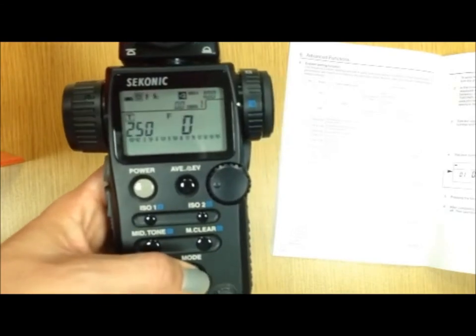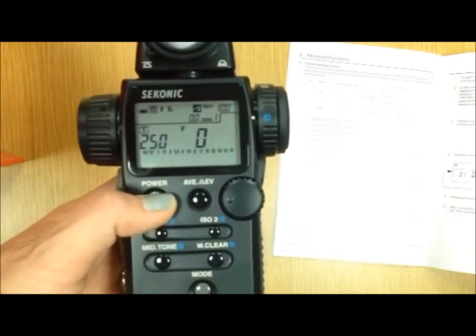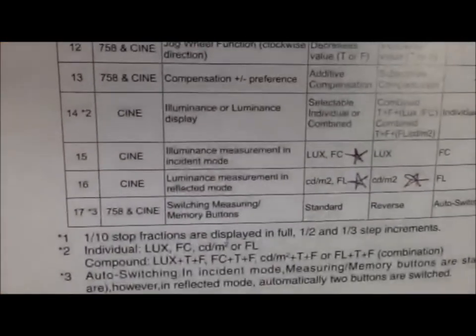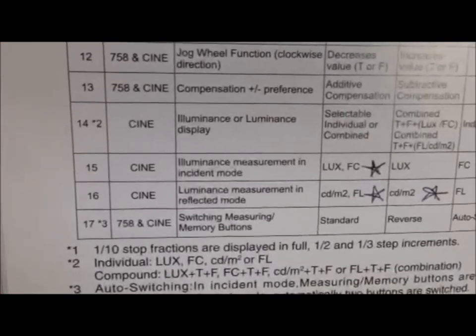In order to enter the custom setting menu, you're going to actually turn your device off. You can find a table of custom settings on page 40 of your manual. And today the two numbers I'm going to show you are 15 and 16.